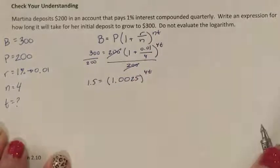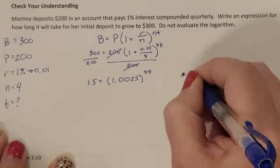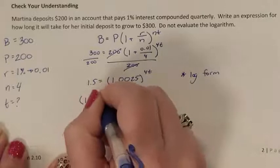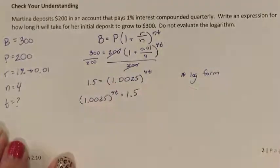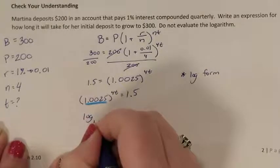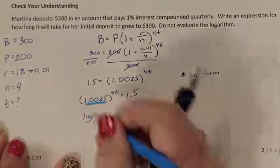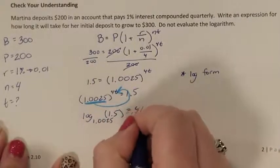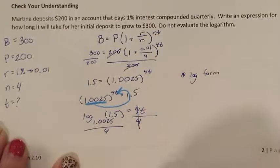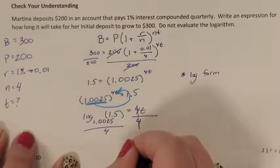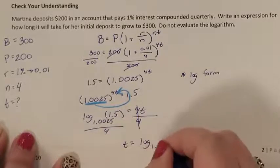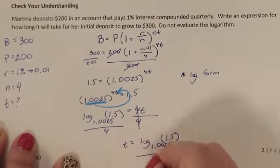If I want to solve for T, I need it out of the exponent, which means I need to put it into log form. To do that, I need to see the exponent part written first so I can identify my base. So I am log base 1.0025 of 1.5, equaling 4T. I need the 4 to go away — divide both sides by 4. So I'm left with T equaling log base 1.0025 of 1.5, all divided by 4.